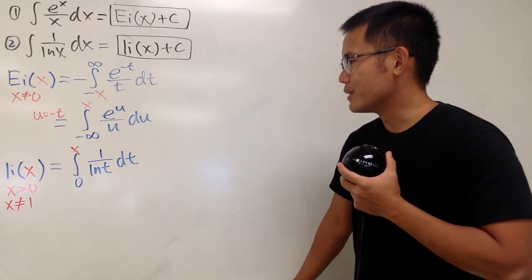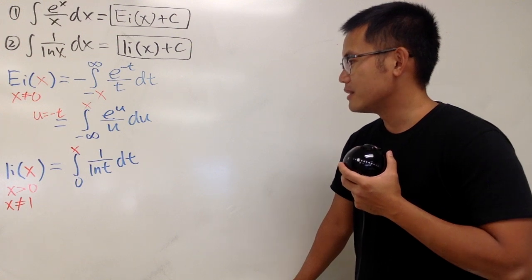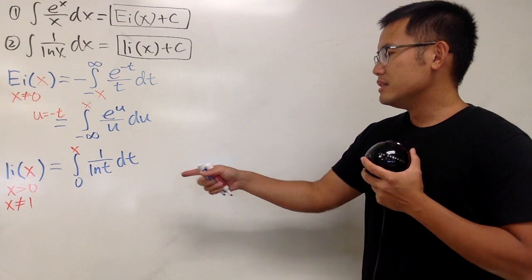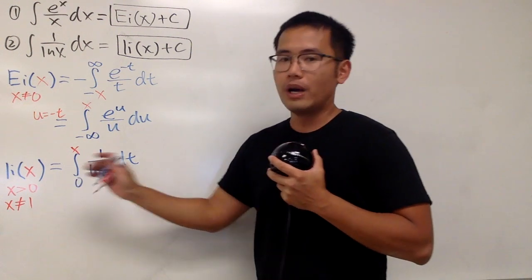I will leave that to you guys to try out. And here is the idea. We will just look at x not being equal to 1. So that's it. Anyway, these two are the little restrictions for li(x).